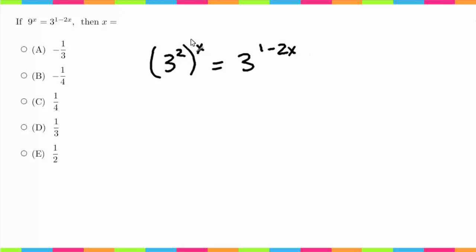Here, if we have an exponent to an exponent, we multiply those. So this becomes 3 to the 2x equals 3 to the 1 minus 2x.